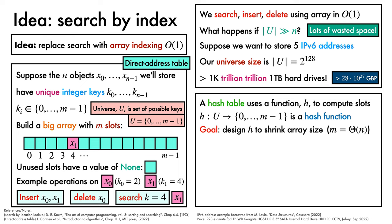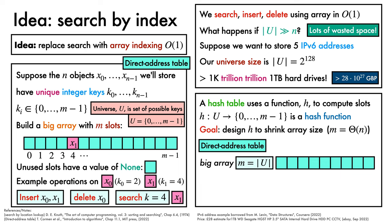Okay, let's clarify this using the insert operation as an example. With a direct address table, which is effectively a big array with the same number of slots as universe elements, if we want to insert object xi, we examine its key ki, and use slot ki in the array to store the object.